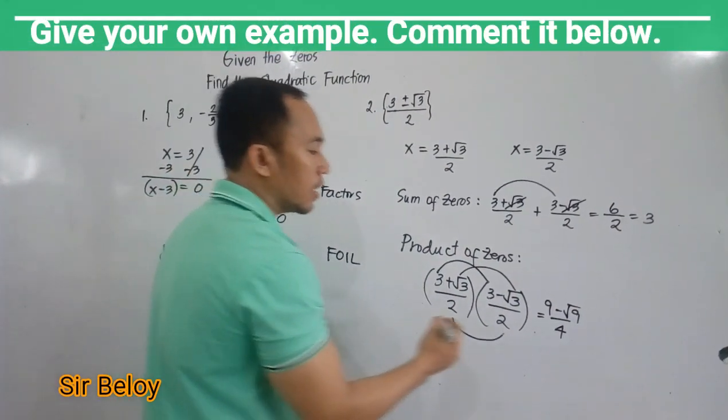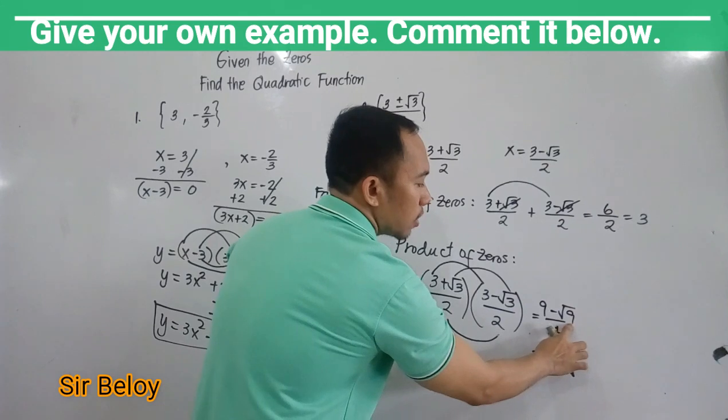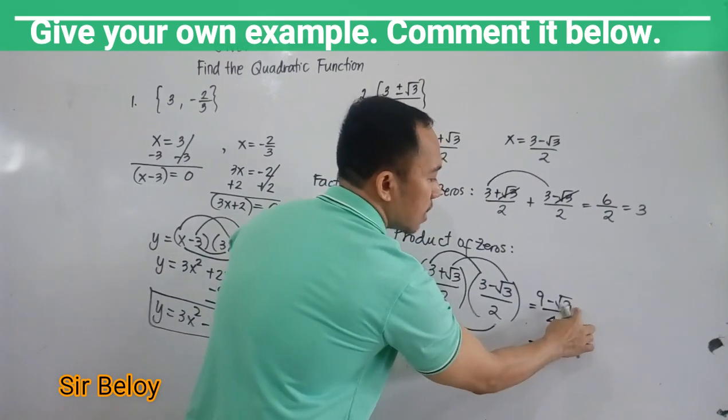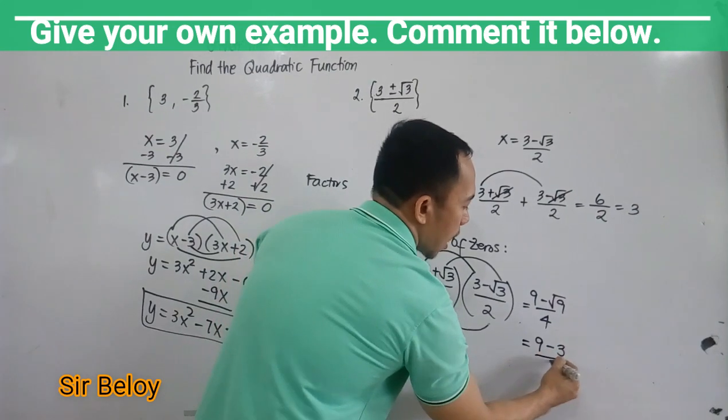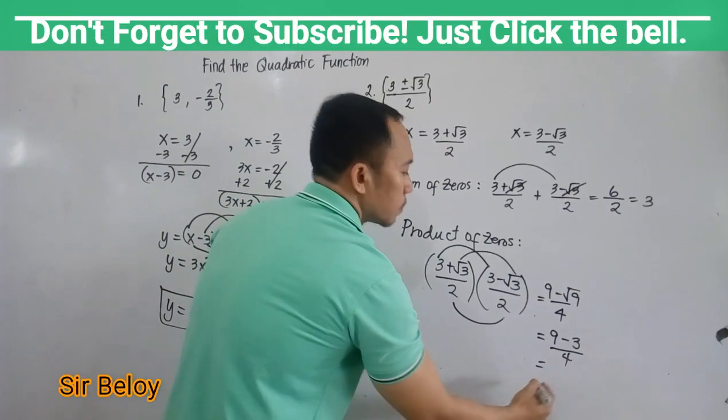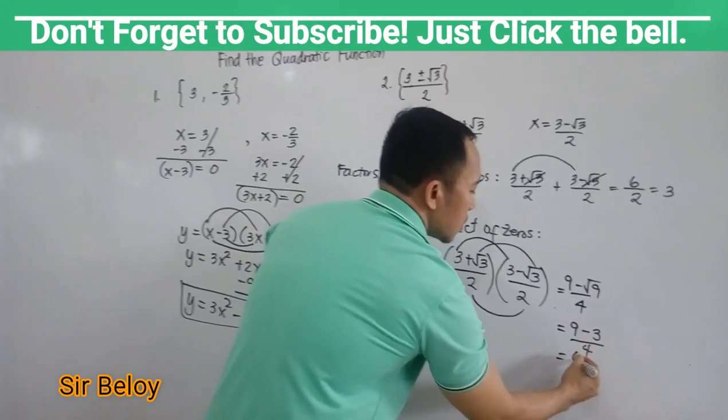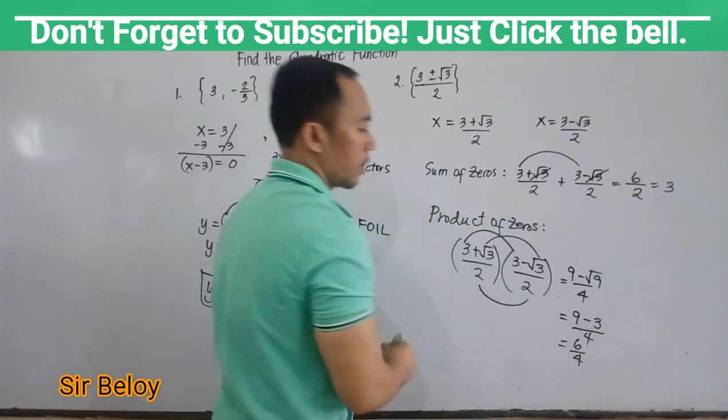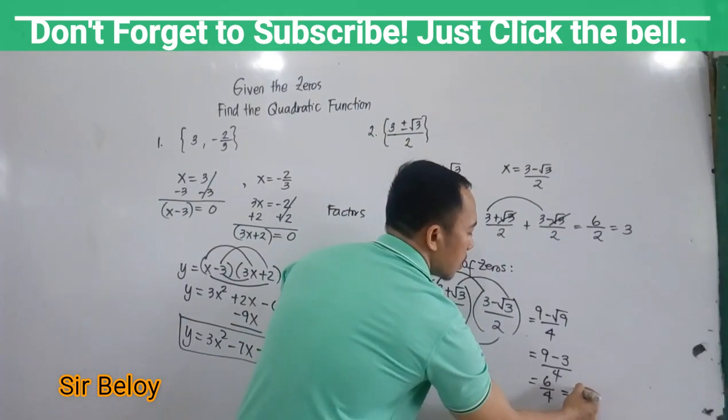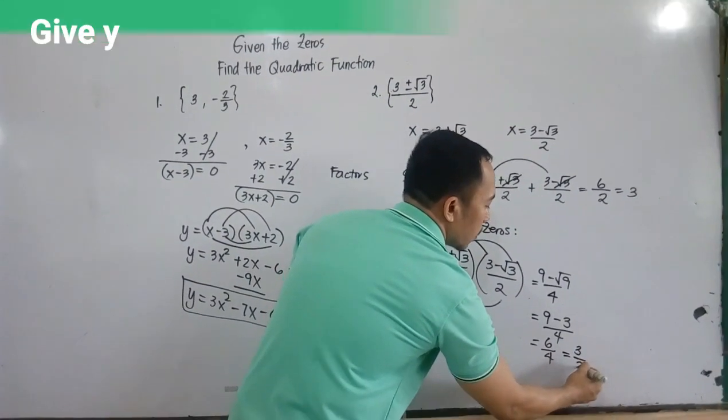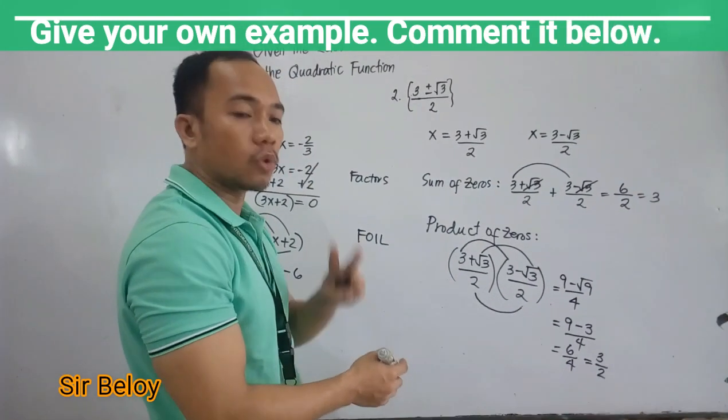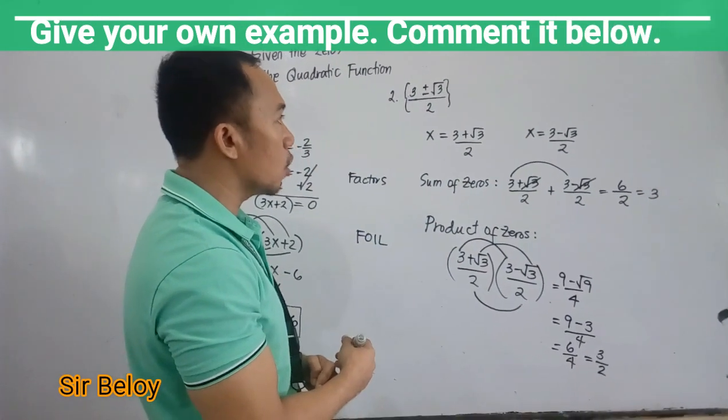But what is the square root of 9? So square root of 9 is 3. So you have 9 minus 3. Getting the square root of this, copy over 4. So this is now 9 minus 3, 6 over 4. Lowest term, get the lowest term. So this is 3 over 2, dividing both numerator and denominator by 2. So the lowest term is 3 over 2.